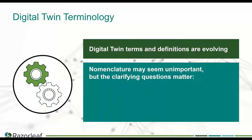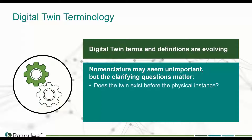It's a tricky thing talking about twins because there are a lot of terms that people use out there. When you talk about digital twins, people are going to say digital twin and virtual twin and product twin and factory twin and all kinds of things. Some of that can seem a little academic, but the nomenclature can be important because of the questions behind it — why are people trying to define it, why are they arguing over terms? The clarifying questions are relevant in terms of understanding what you're building and how it relates to the other things you might need.